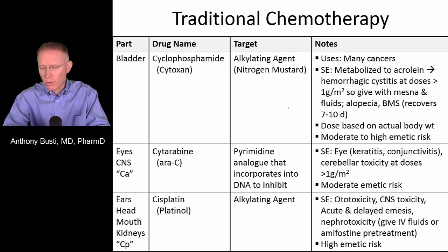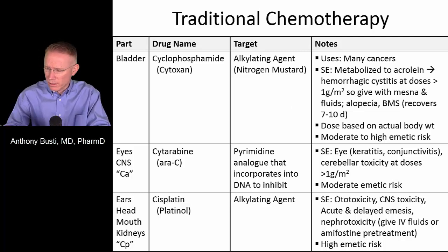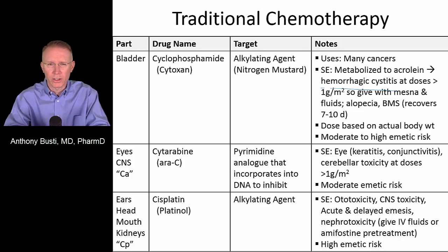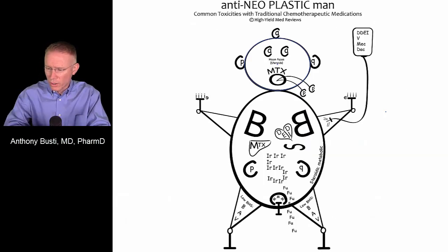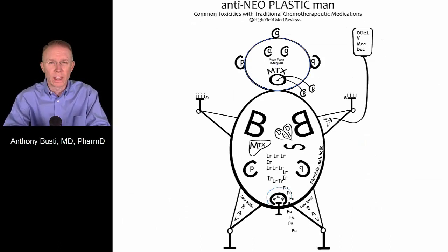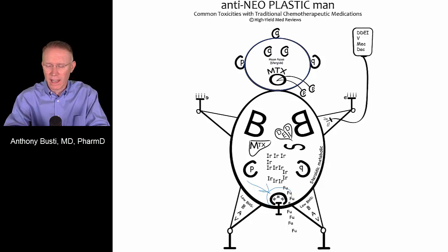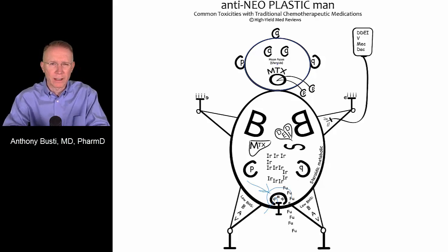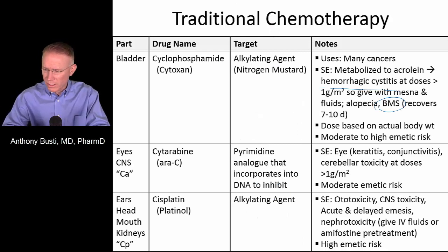Moving on to cyclophosphamide — this is an alkylating agent. Unfortunately, it gets metabolized to a metabolite called acrolein that causes hemorrhagic cystitis, especially at larger doses. It is also known to cause bone marrow suppression. Looking at antineoplastic man down at the bladder, there is a letter C corresponding to cyclophosphamide causing hemorrhagic cystitis, and the letter M lining the inside of the bladder reflects the use of mesna to prevent the cyclophosphamide-associated hemorrhagic cystitis.